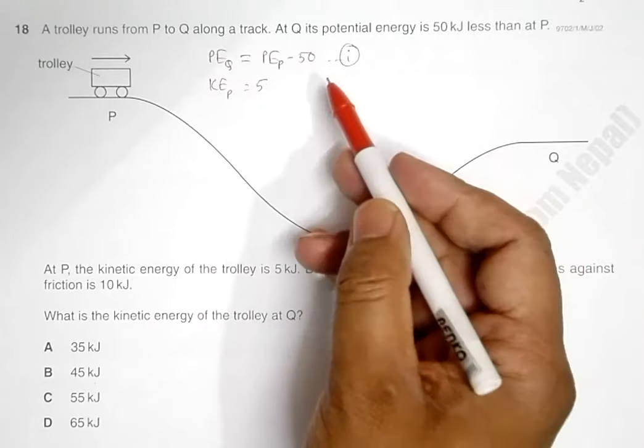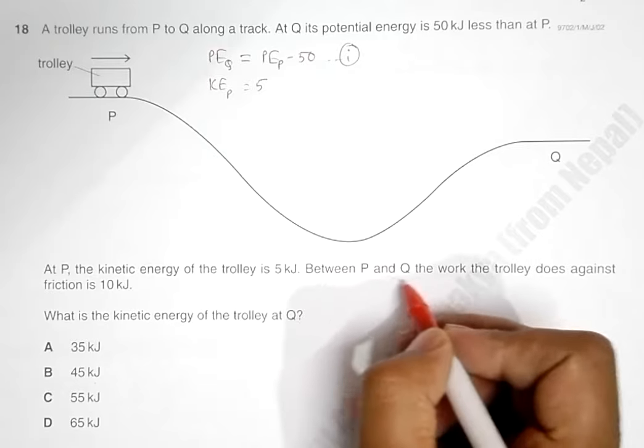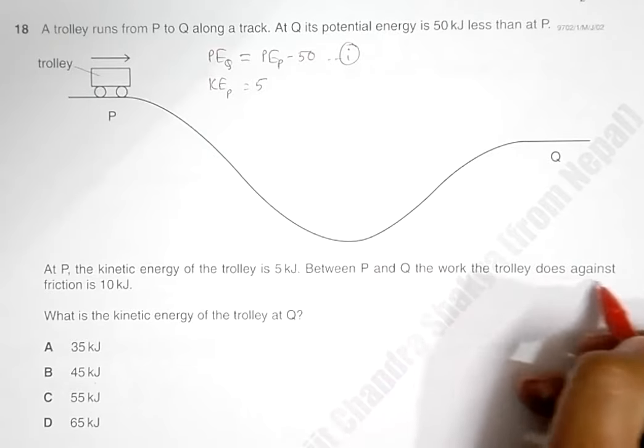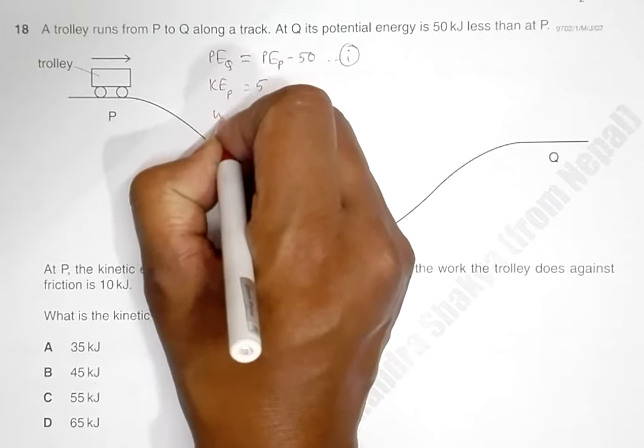Between P and Q, the work the trolley does against friction is 10 kilojoules. So that means the work done against friction is equal to 10 kilojoules.